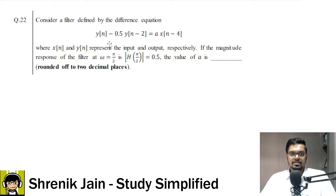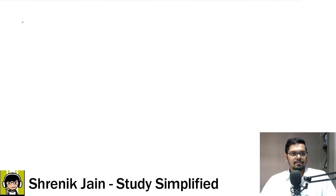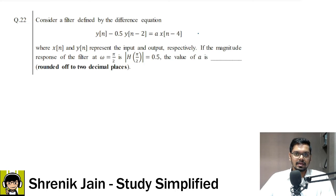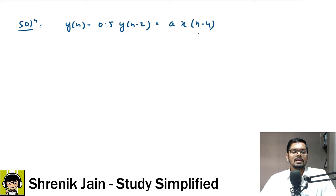The next question is consider a filter defined by this difference equation where X of N, Y of N are input output respectively. If the magnitude response of the filter at omega is equal to pi by 2 is mod H of pi by 2 is 0.5, the value of a is dash. Round it off to two decimal places. So, be careful while writing the answer. Nevertheless, now let us see the solution. So, the very first step is the difference equation.